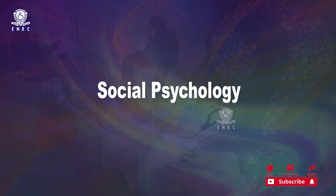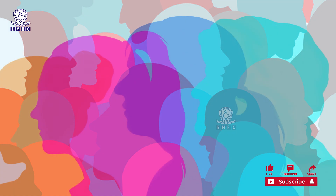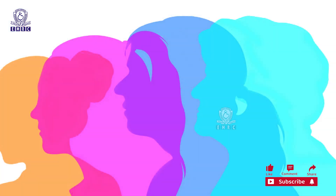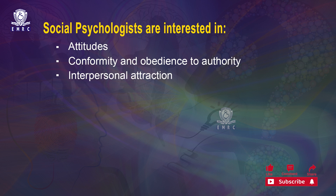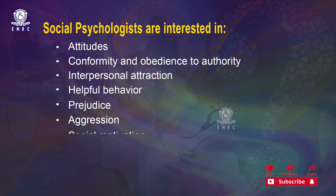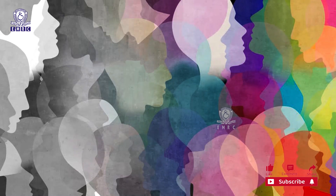Let us now move on to social psychology. It explores how people are affected by their social environments and how people think about and influence others. Social psychologists are interested in topics such as attitudes, conformity and obedience to authority, interpersonal attraction, helpful behavior, prejudice, aggression, social motivation, inter-group relations, group dynamics, and many others. This field examines people's interactions with other people.